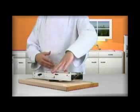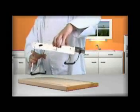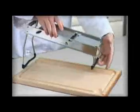To use it directly on the counter, unfold the two feet until the safety catch locks into place. The sliced fruit or vegetables can be collected directly on the counter or on a plate.